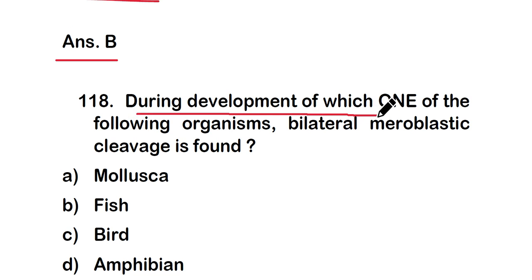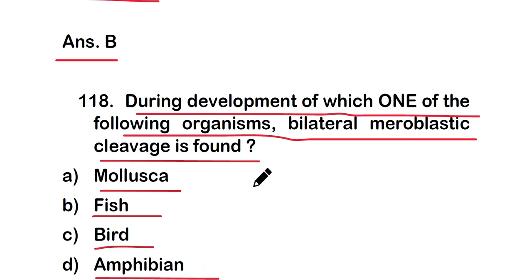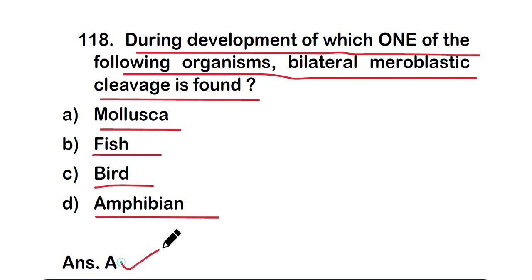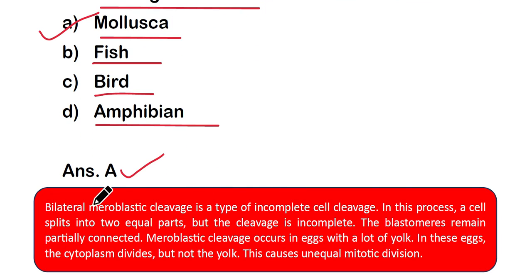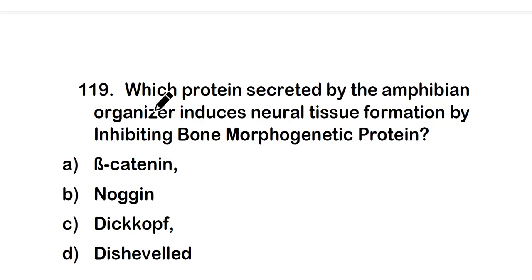Question 118: During development of which organism is bilateral meroblastic cleavage found? (a) Mollusca, (b) fish, (c) bird, or (d) Amphibia. The correct answer is option A — Mollusca. Bilateral meroblastic cleavage is a type of incomplete cell cleavage where the cell splits into two equal parts but remains partially connected; meroblastic cleavage occurs in eggs with a lot of yolk.